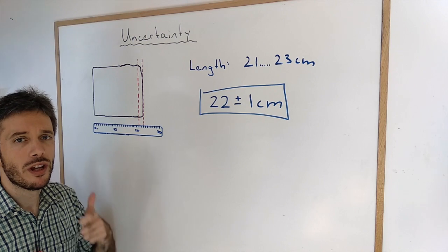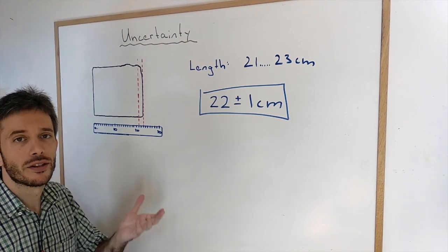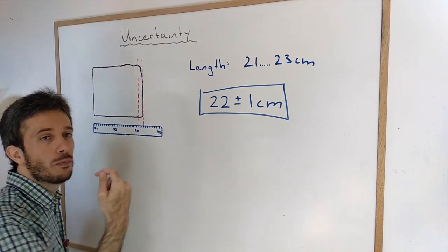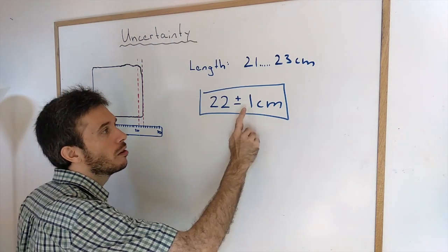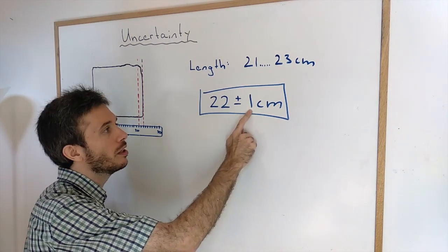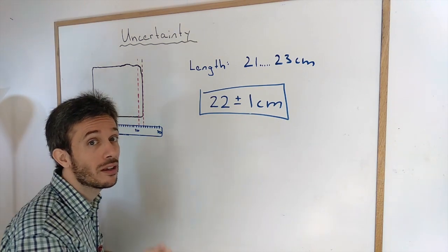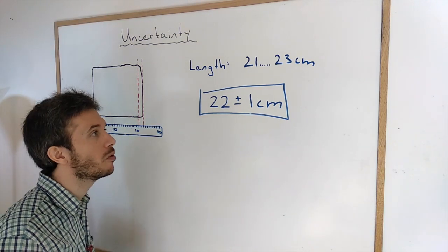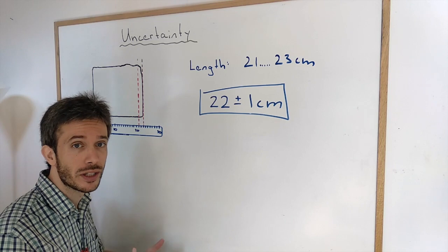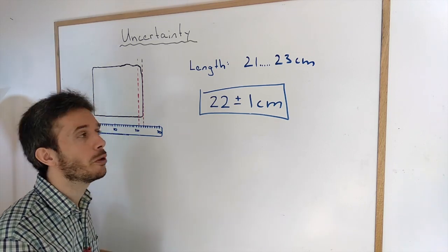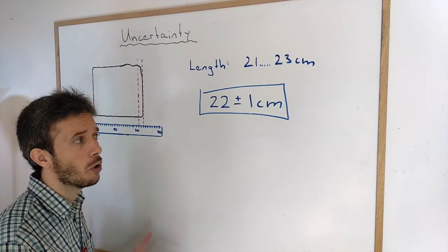What is the link between precision and uncertainty? The more precise a measurement is, the lower the uncertainty of it is. The higher the uncertainty is, the less precise it is. Note that there is no direct link between precision and accuracy. I will have another video where we'll be talking about that distinction a bit more.